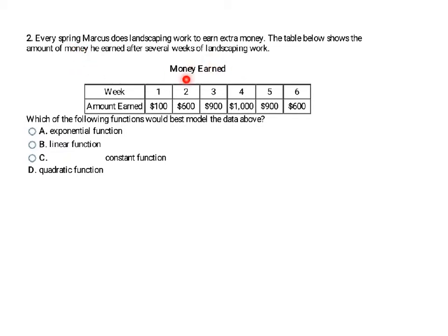This problem is similar. It gives us a table about how every spring Marcus does landscaping work for extra money, showing the amount of money he earned after several weeks. It wants to know: is this exponential, linear, constant, or quadratic? First I look at the differences: 600 minus 100 is 500, and 900 minus 600 is 300. Right away I see it's not going to be linear because the first differences don't match, but I want to continue calculating to see if the second difference is the same.